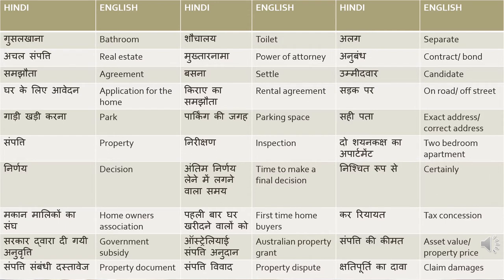Samchata usually comes in terms of a rental agreement — kirai ka samchata. Basna means to settle, as in 'I have settled in Sydney for the past four years, I'm looking for a change' — main Sydney mein basa hua hun. Umedwaar means candidate. Usually the real estate agent will say that the landlord will check all the applications and choose the right candidate — to makaan malik sare avedan dekhenge aur sahih umedwaar chunenge.